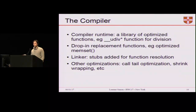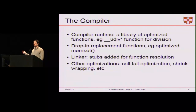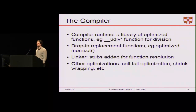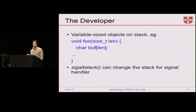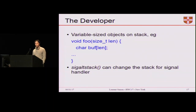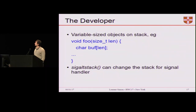Most problems also occur because of compiler optimizations, though I won't go into more detail due to time constraints — the slides are available if you're interested. On the developer side, variable-size objects stored on the stack are something we can't really support because the compiler can't determine the object size at compilation time. There are also some functions that can be problematic, such as sigaltstack, which allows the programmer to change the stack location for signal handlers.